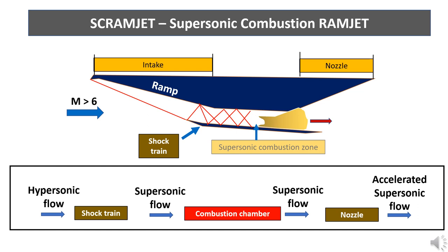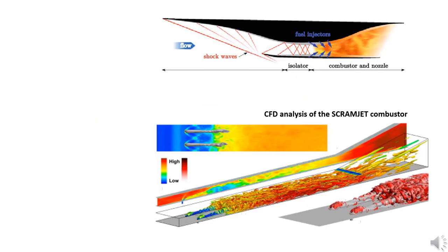So when the air enters the combustion zone, the speed of air will be reduced to supersonic speeds in the range of Mach 2. This is the reason for the name supersonic combustion ramjet, since the combustion takes place at supersonic air speeds.